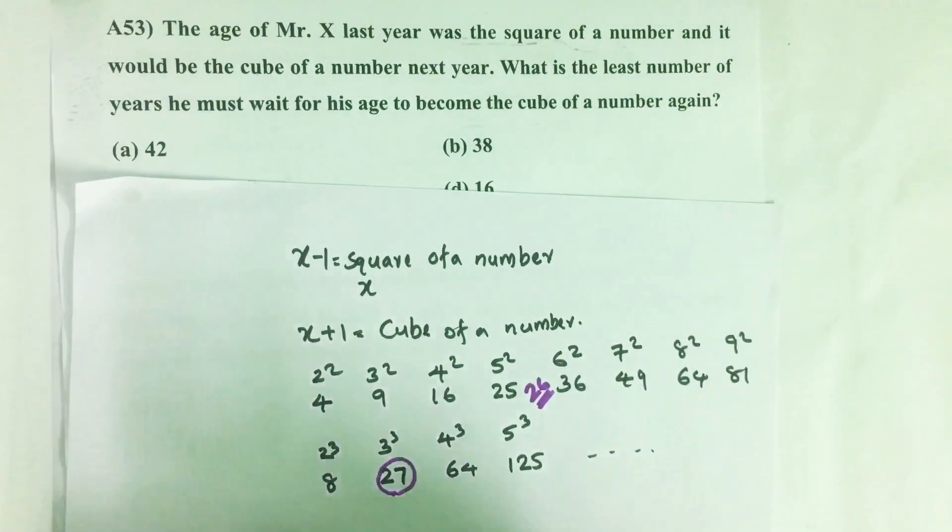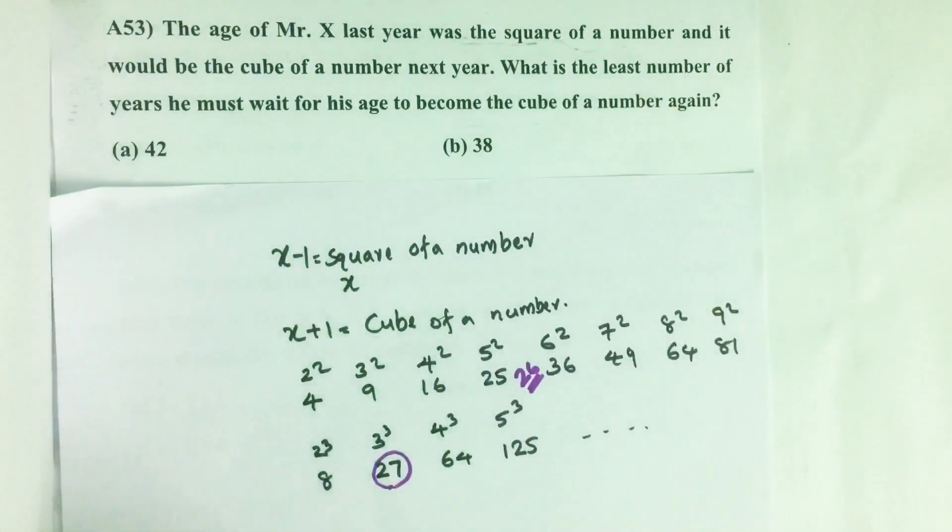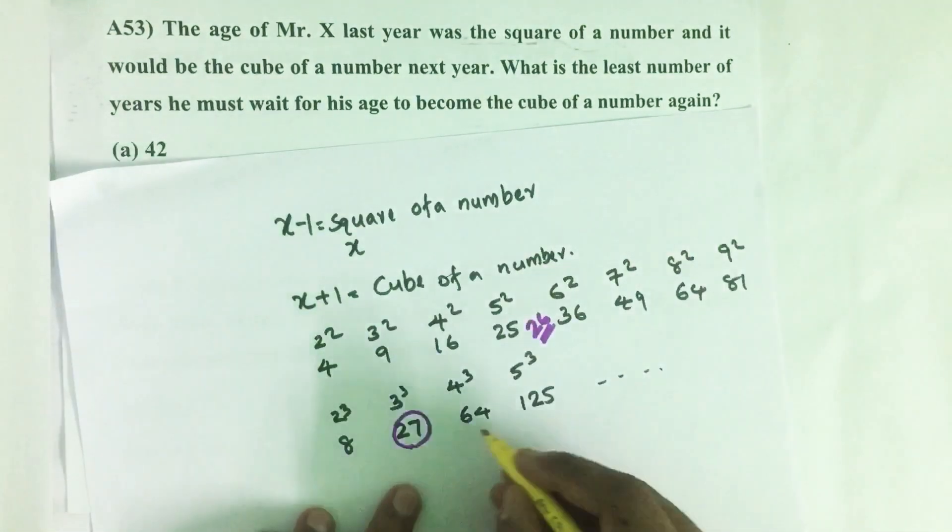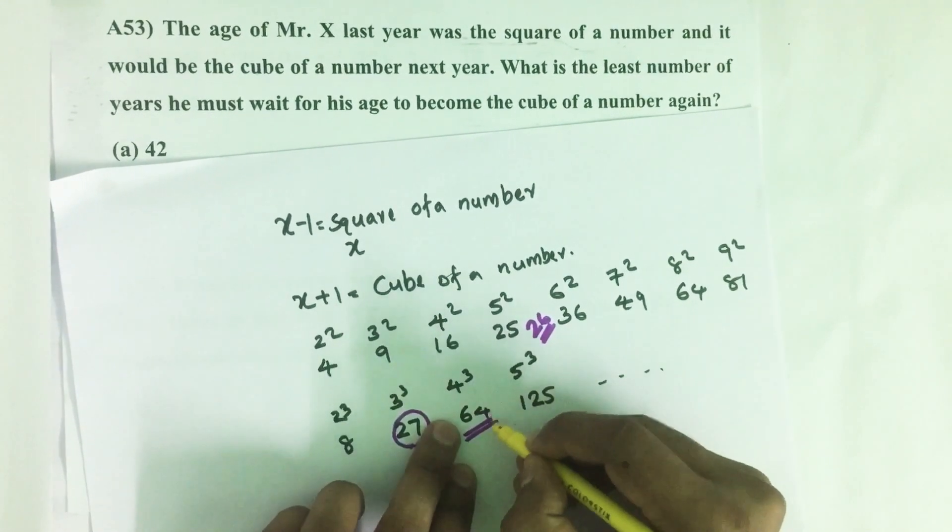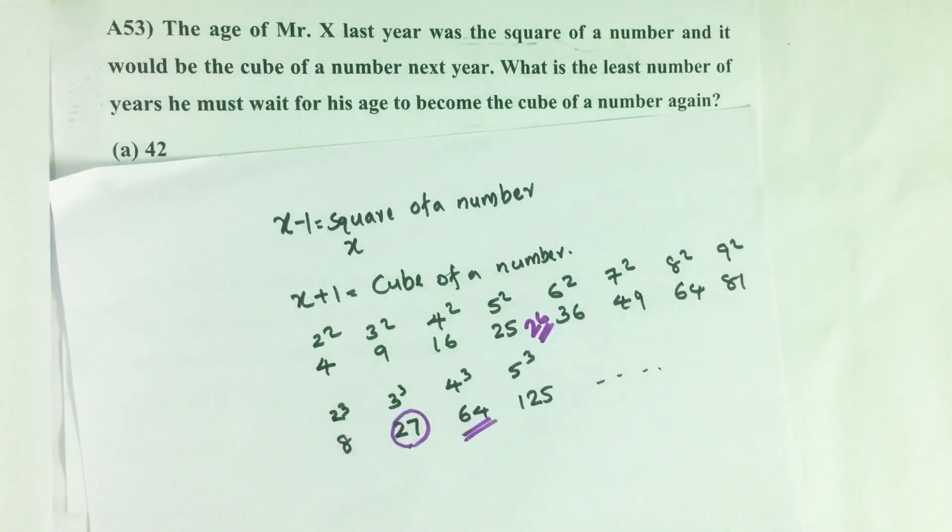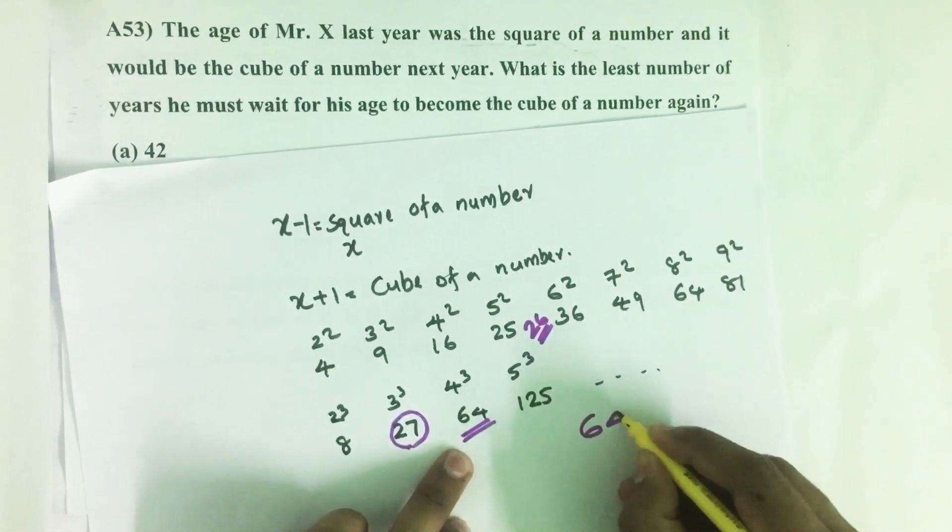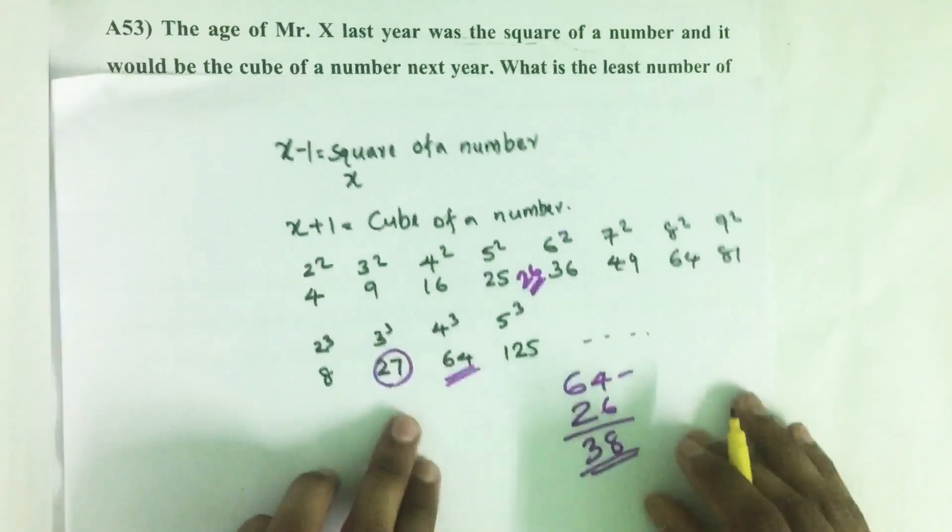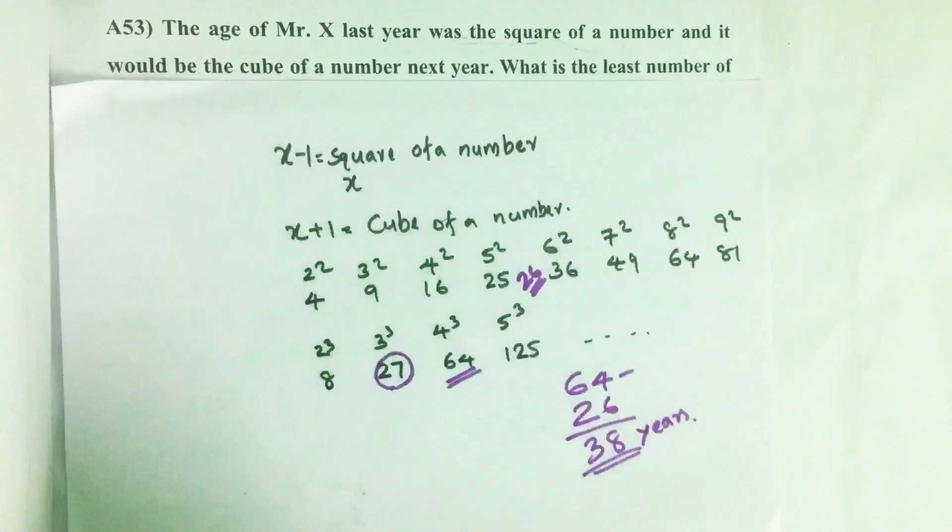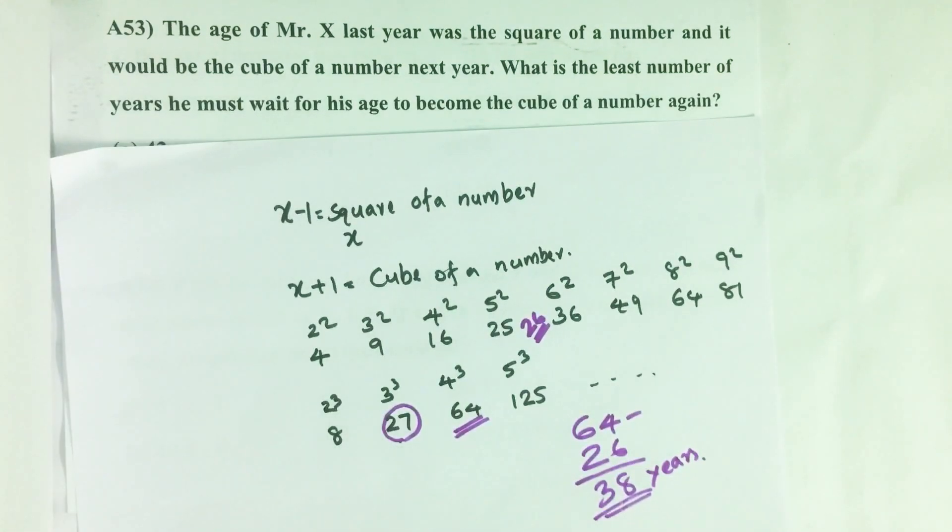The question asks, what is the least number of years he must wait for his age to become a cube again? When his age becomes 64, which is 4 cubed, that will happen. His present age is 26, so 64 minus 26 equals 38. After 38 years, his age will be a cube of a number again.